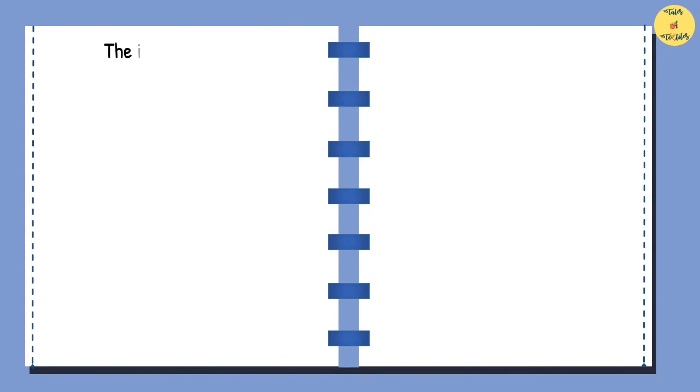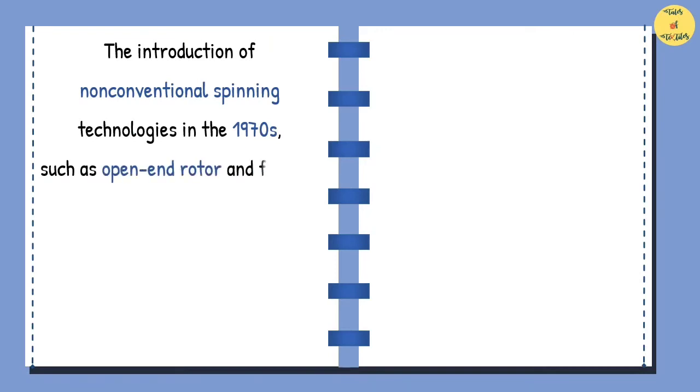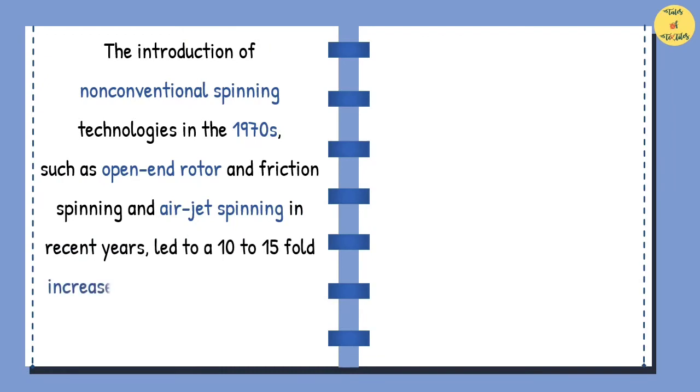The introduction of non-conventional spinning technologies in the 1970s, such as open-end rotor and friction spinning and air jet spinning in recent years, led to a 10- to 15-fold increase in yarn production speed over the last few decades.